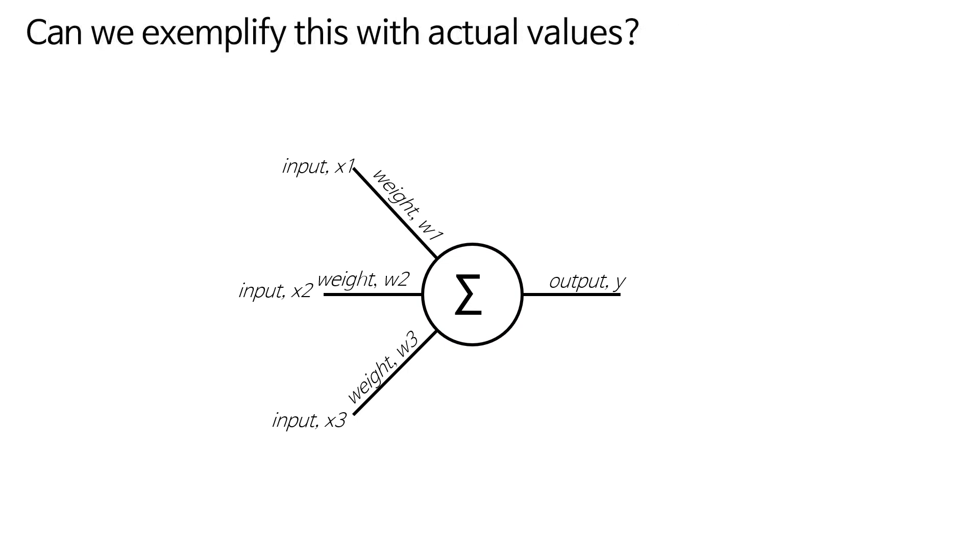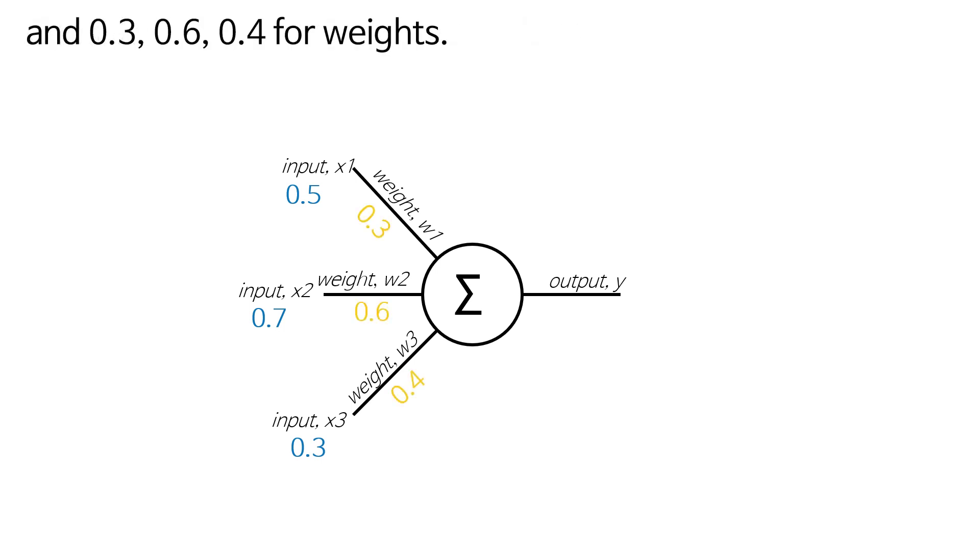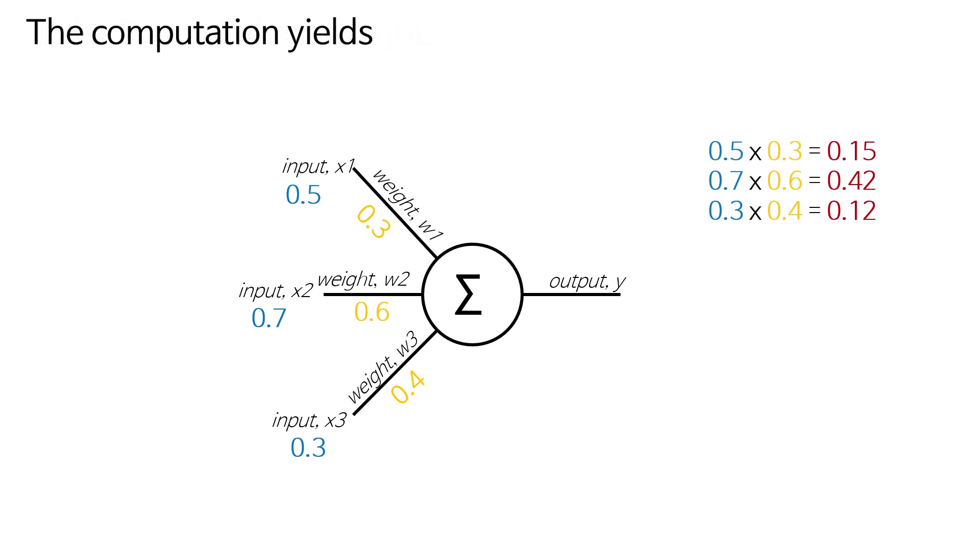Can we exemplify this with actual values? Consider 0.5, 0.7, 0.3 for input values and 0.3, 0.6, 0.4 for weights. The computation yields 0.69.